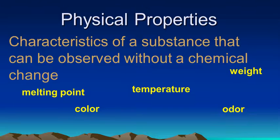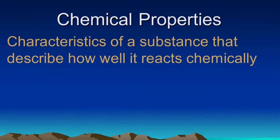The other type of property is called a chemical property. And those are the characteristics of a substance that describe how well it's going to react chemically. So for example how flammable something is. If we say that gasoline is very flammable, well that's telling us how well it's going to react. And so that's a chemical property.